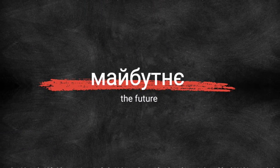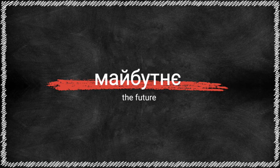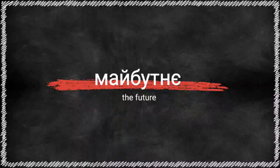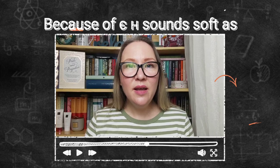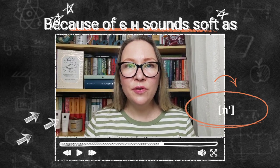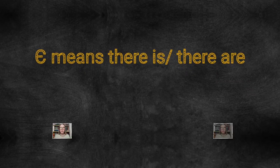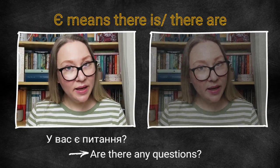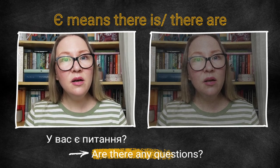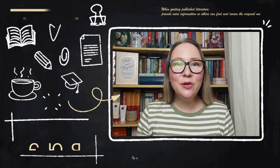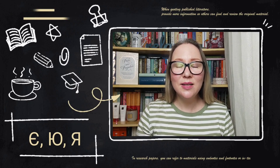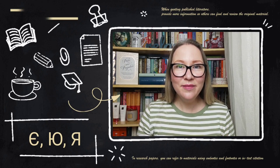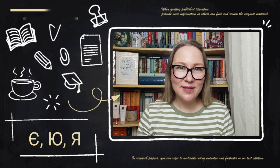For example, «майбутнє» — the future. Because of Є, the Н is pronounced softly as НЬ. The letter Є alone also forms the word which means «there is» / «there are» — «є питання?» — are there any questions? We will talk about this letter as well as about Ї and Й in a separate lesson.